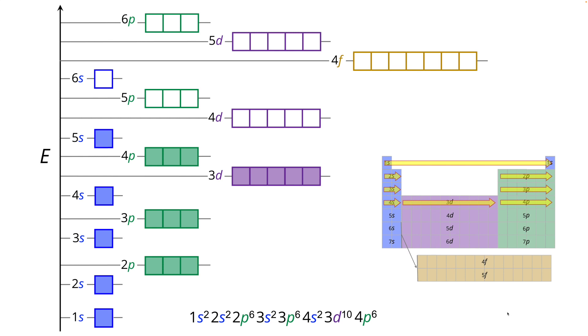Next up is the fifth row. We have 5s2 for the 5s subshell. Next comes the 4d subshell and that gives us 4d10. After that comes the 5p subshell and we have 5p6 completing the fifth row of the periodic table.